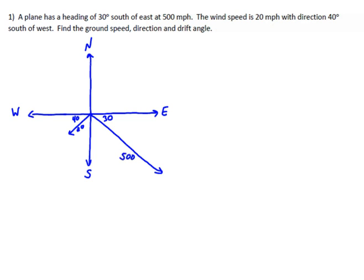In this classic vector problem, we're going to analyze using vectors in trigonometry how a plane with a heading of 30 degrees south of east moving at 500 miles per hour is affected by a 20 mile an hour wind that's got a direction of 40 degrees south of west. I've drawn the two vectors.